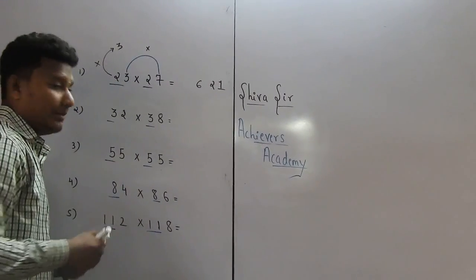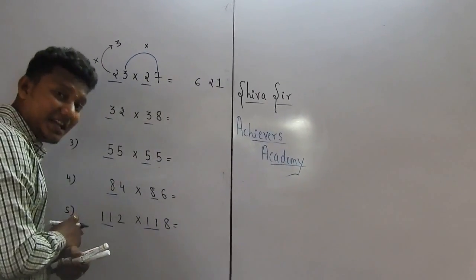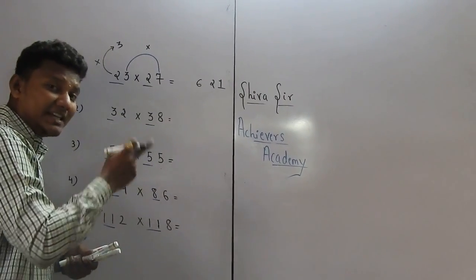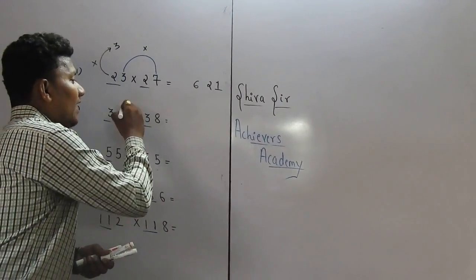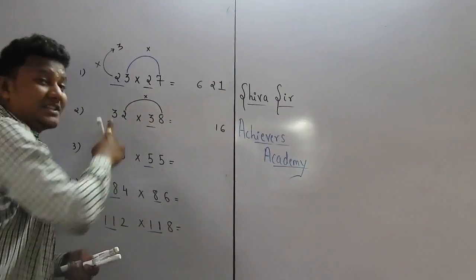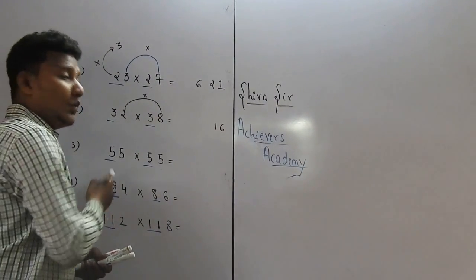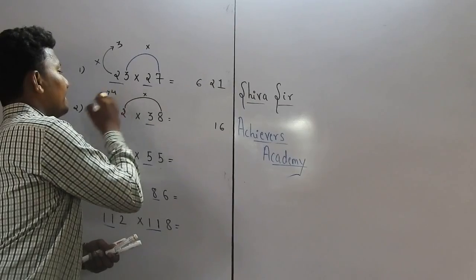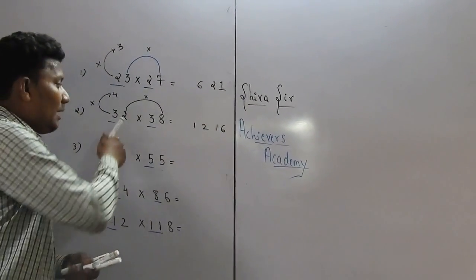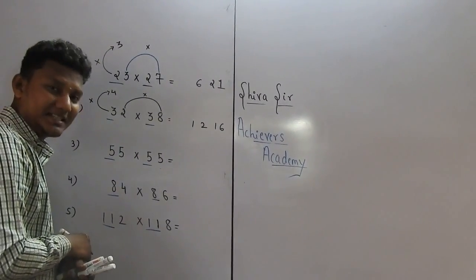Focus on the next example. Apply the same fundamental, the same tricks. Let's see. The first digit is same and the sum of the two digits is equal to 10. So 2 times 8 is 16. What is the next number after 3? It is 4. So 3 times 4 is 12. So we got our answer: 32 into 38 equals 1216.